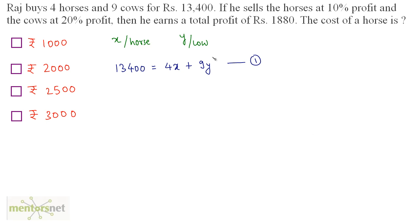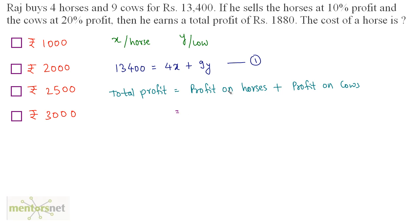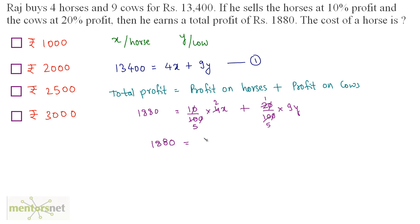The total profit is the sum of profit on horses and profit on cows: 10% of 4X plus 20% of 9Y equals 1,880. This simplifies to (2/5)X + (9Y/5) = 1,880, which gives equation 2: 2X + 9Y = 9,400.